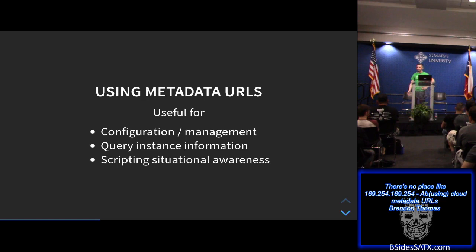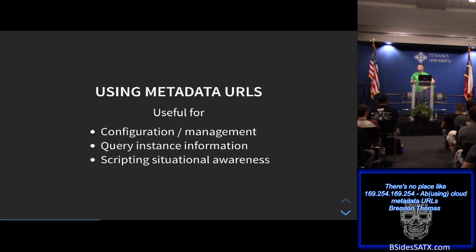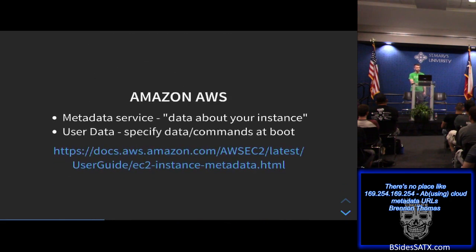There are a lot of legitimate uses for metadata URLs, mostly around configuration and management. You can query it to get instance information like your IP address, public IP, MAC address — a lot of different juicy information. When it comes to scripting, in Python you might need to know what availability zone you're in, so you can query the metadata and pull that out. This makes scripts somewhat agnostic — they can figure out where they are in life without hard-coding values.